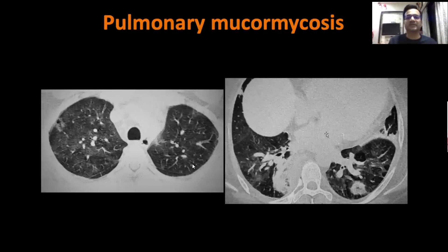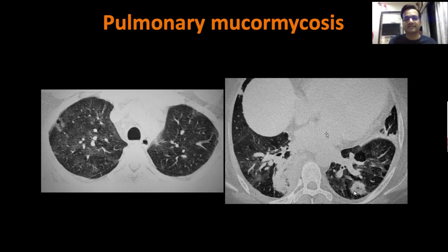Here is one typical example. You can see ground glass lesions typical of COVID-19 — likely in a resolving stage — and in addition the patient has started developing a large nodule or consolidation with central ground glass attenuation. There is a clear reverse ground glass halo. No matter what, if there is clinical suspicion, this is not going to be COVID-19 or aspergillosis. This is more likely to be mucormycosis, and you should always raise this possibility.